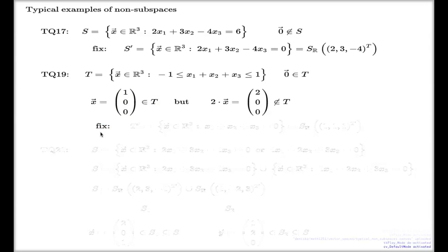If you want to fix, the first reasonable fix which converts this T into a subspace T dash is the collection of vectors where x1 plus x2 plus x3 equals 0. And that's again an example of the orthogonal subspace.